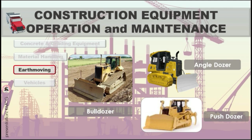The bulldozer is suitable for moving soil for short distances, only up to about 50 meters. For the angle dozer, the blade mounted on the tractor can be rotated about a vertical axis as well as raised and lowered to permit side casting of materials. The push dozer approaches the scraper from behind and engages a push block on the rear of the scraper with a push blade.